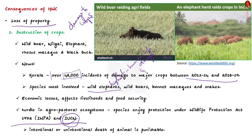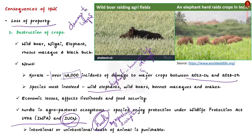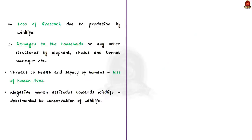These species enjoy protection under the Indian Wildlife Protection Act 1972 and IUCN, which becomes a hurdle in agro-pastoral ecosystems because any action leading to intentional or unintentional death of the animal is punishable. Humans must be cautious and often cannot afford beneficial methods. Loss of property also includes loss of livestock — predators like leopard, lion, tiger, and wild dog hunt livestock when searching for food. Damage to households and structures is mainly caused by elephants, rhesus macaques, and bonnet macaques.